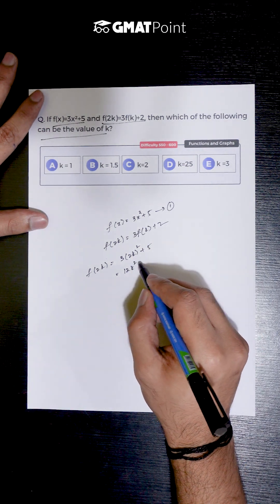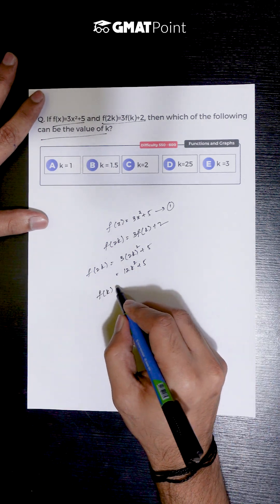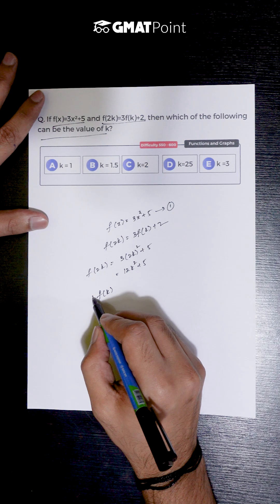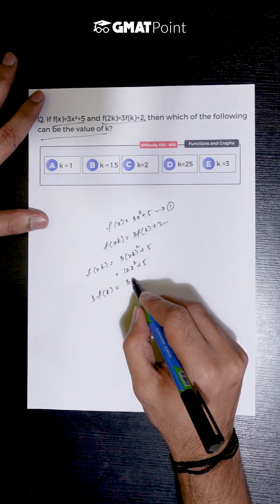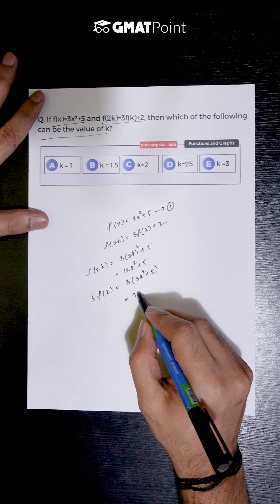We already know the value of f(k) to be 3k² + 5. So 3f(k) can be calculated as 3(3k² + 5) which is 9k² + 15.